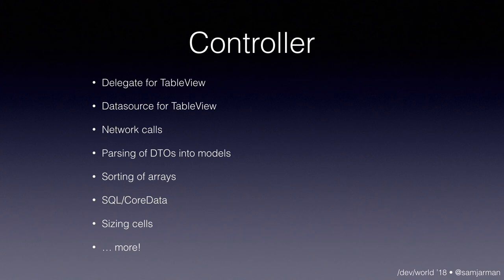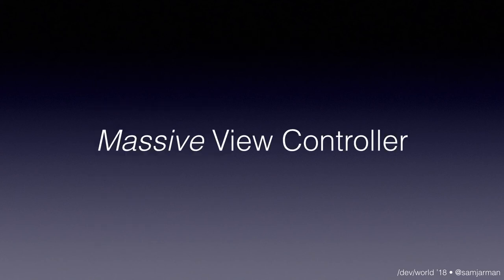So the answer was: let's just put it in the controller. It's not model code, it's not view code, so what's left is the controller. The controller started doing a lot — like a real lot. It was the delegate for the table view, the data source for a table view. It did network calls. It parsed the results of network calls into models, either via a dictionary or via a DTO. It did sorting and manipulation of data for display. It accessed SQL or Core Data. It did sizing, estimation, and cell-for-row-index-path stuff. And it did so much more — pretty much everything you needed that wasn't in the app delegate.